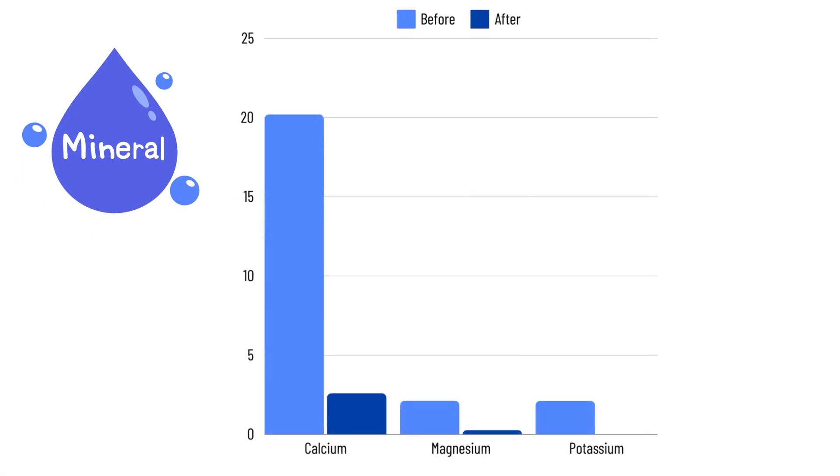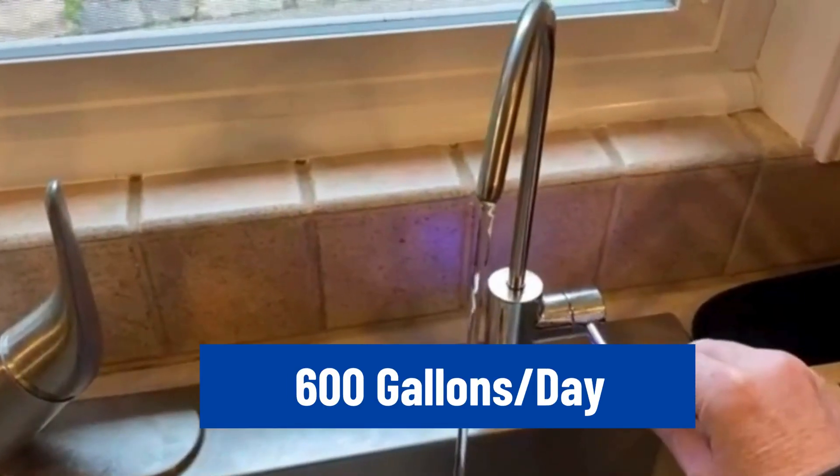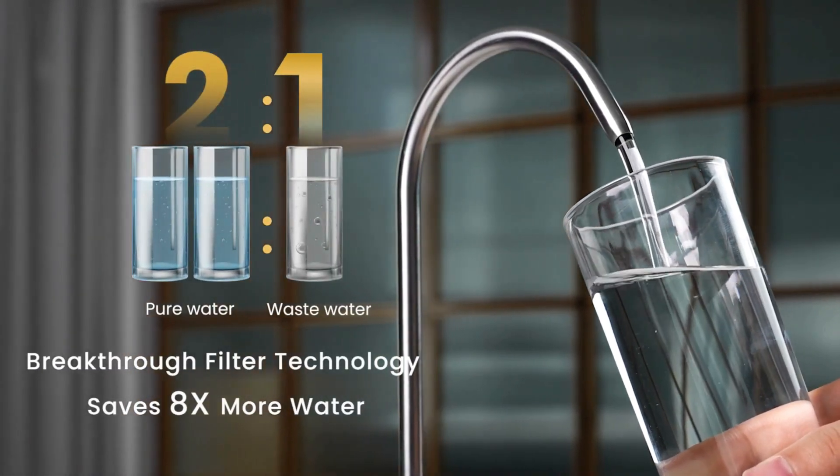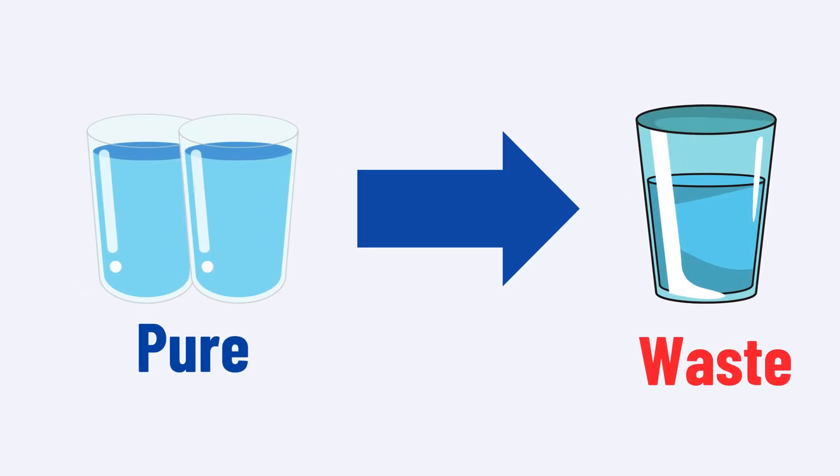On the flip side, Waterdrop removes minerals, too, and it doesn't have a built-in remineralization. Its water flow rate is 600 gallons per day, and the unit has a 2 to 1 pure-to-wastewater ratio, meaning that only 1 gallon of water is lost for every 2 gallons purified.